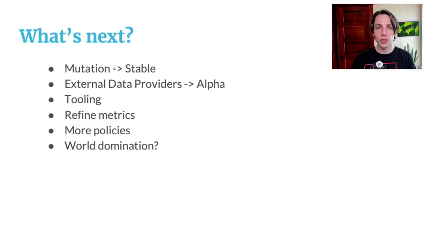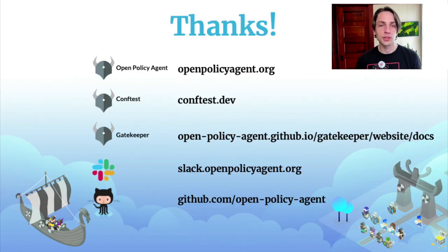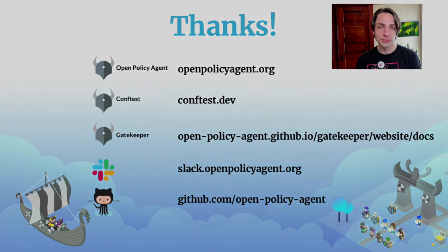So what's next for the project? We're going to be working hard to bring mutation to stable and can't wait to get your feedback on the new functionality. We also have a proposal on how Gatekeeper could be integrated with external data providers to allow leveraging large datasets in our policy decisions. We'll continue to refine our tooling, metrics, and constraint library. Thank you so much for joining today. You can learn more about OPA, ConfTest, and Gatekeeper on the web. We have a Slack channel where you can ask questions and we're on GitHub. Enjoy the rest of KubeCon. Thank you.